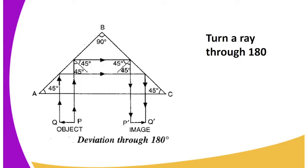And it's again totally internally reflected as the angle of incidence is 45 degrees. The ray is deviated through 90 degrees, and it deviates a further 90 degrees. Hence, the ray undergoes a total deviation of 180 degrees.